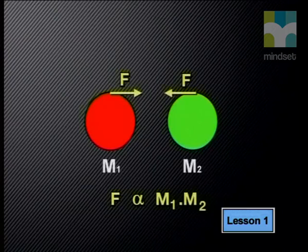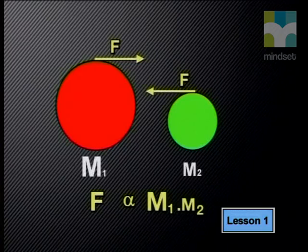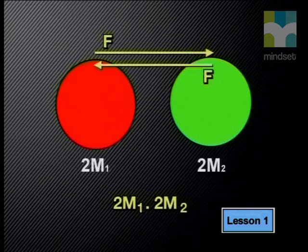Larger objects are just made up of millions and millions of mass particles packed together. The law further says that the force of attraction between particles or objects is directly proportional to the product of their masses. This means that the greater the mass of an object, the greater its force of gravity will be. If you double the mass of one object, you double the gravitational force. And if both masses are doubled, the gravitational force increases fourfold.